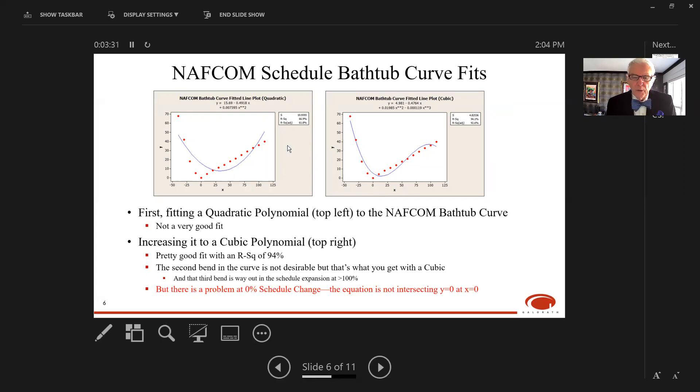I first tried a quadratic polynomial on the top left with X and X squared terms. That's not a very good fit—the R squared of 67 percent isn't great. I increased it to a cubic, added the X cubed term, which gives a fairly good fit with R squared 94 percent. You may notice there's a second inflection point in that curve on the far right side. That's not desirable, but that's what you get with a cubic polynomial. As long as you're not doubling the schedule, the polynomial behaves properly.